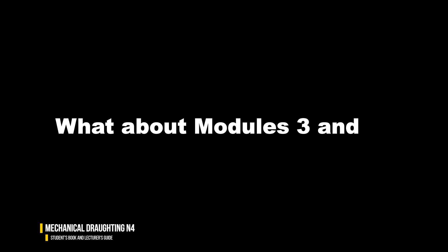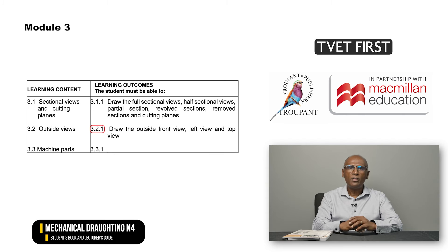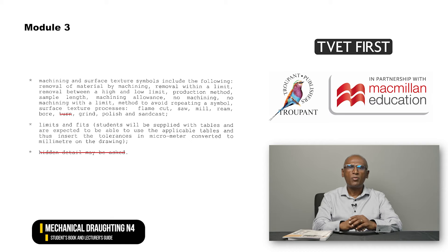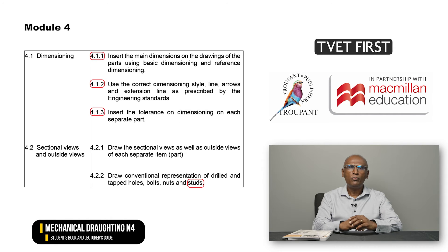What about modules 3 and 4? Module 3 on sectional drawings spells out the outside views as outside front view, left view and top view. The surface texture process for turning has been left out of the new curriculum, along with the outcome called 'hidden detail may be asked'. Module 4 on detailed drawing spells out in detail what is required under dimensioning. Conventional representations now also include studs.